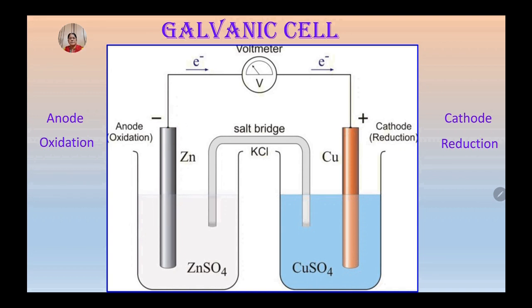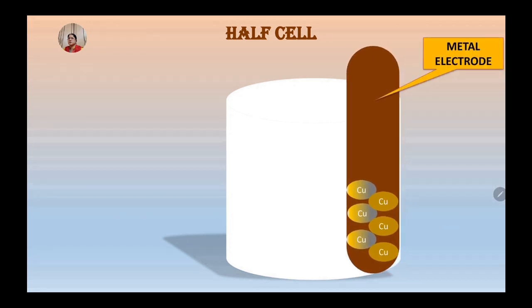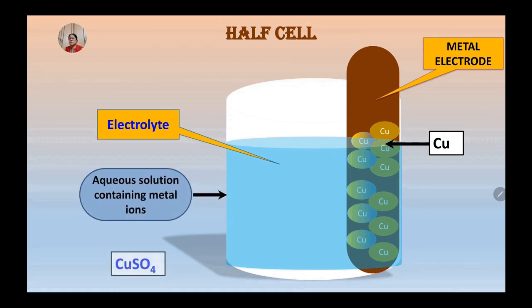This is a vessel which contains copper electrode which is made of copper atoms. This electrode is dipped in an electrolyte which contains an aqueous solution of metal ion. As the electrode is made up of copper, this electrolyte is a solution of water soluble salt of copper, that is copper sulphate. This is a half cell having copper as an electrode and copper sulphate as an electrolyte.